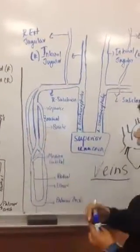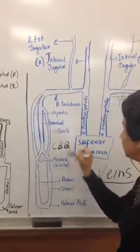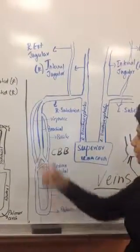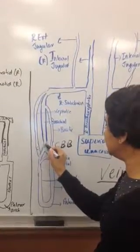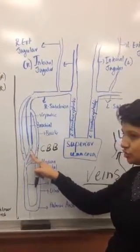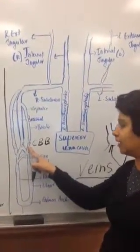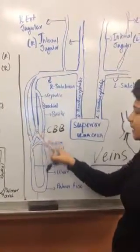How I remember it is CBB, starting from lateral to medial. This is C, this is B, this is B: cephalic, brachial—which is the same—and basilic, like a basil leaf. Cephalic, brachial, basilic.